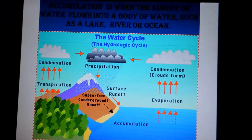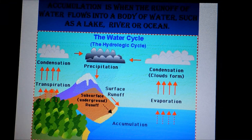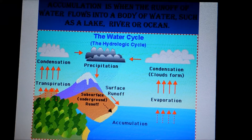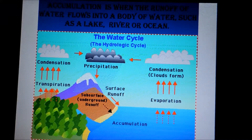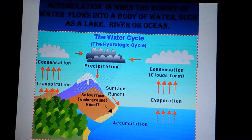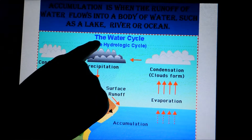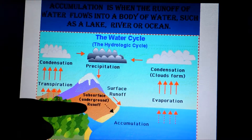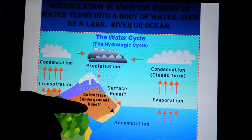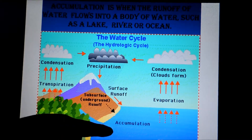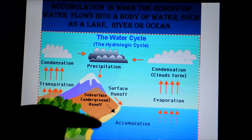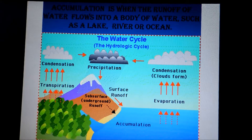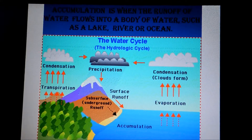Accumulation is when the runoff flows into a body of water such as a lake, river, or ocean. As you can see in the water cycle diagram, the runoff creates accumulation down here in the river, pond, and so forth.